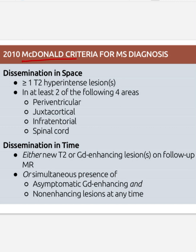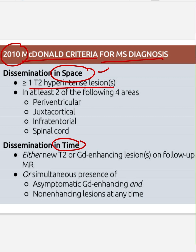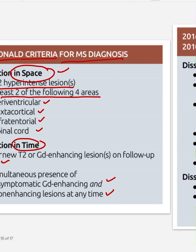Now we will discuss the McDonald criteria. These were discussed in 2010 and later revised in 2016. The McDonald criteria require dissemination in space and in time. For dissemination in space: one or more T2 lesions in at least two of the following areas — periventricular, juxtacortical, infratentorial, and spinal cord. For dissemination in time: new T2 or gadolinium-enhancing lesion on follow-up MRI, or simultaneous asymptomatic gadolinium-enhancing and non-enhancing lesions at any time.